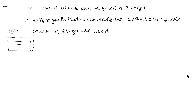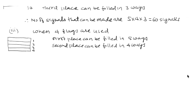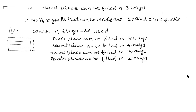Part 3 — when four flags are used: The first place can be filled in 5 ways using any of the five flags. The second place can be filled in 4 ways using any of the four remaining flags. The third place can be filled in 3 ways using any of the remaining three flags. The fourth place can be filled in 2 ways using any of the two remaining flags.